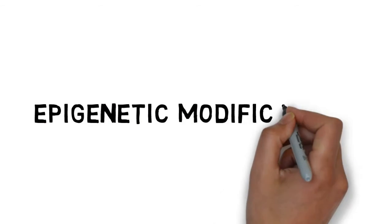Additionally, certain changes occur that affect how the code is read. These are called epigenetic modifications.